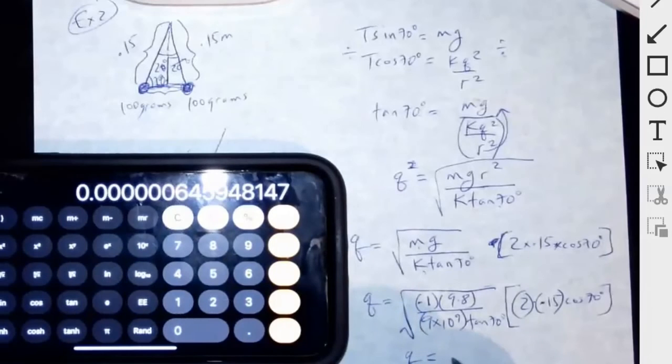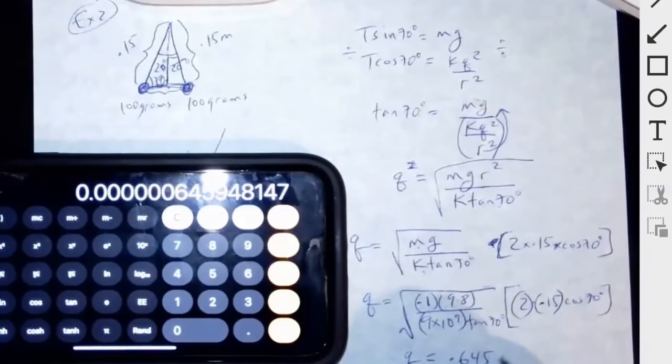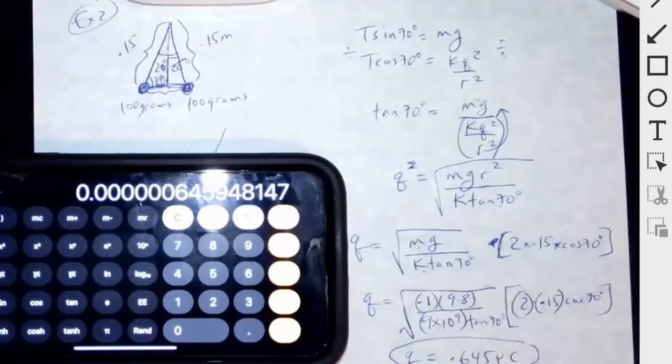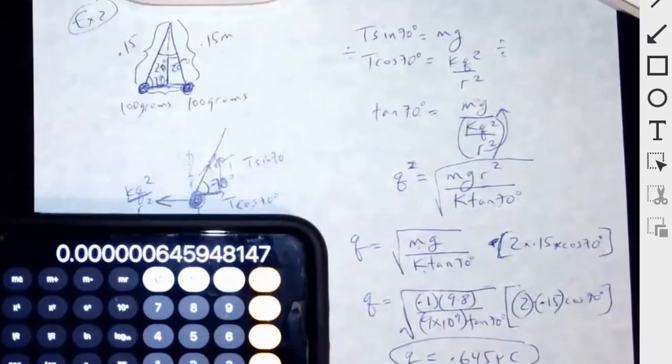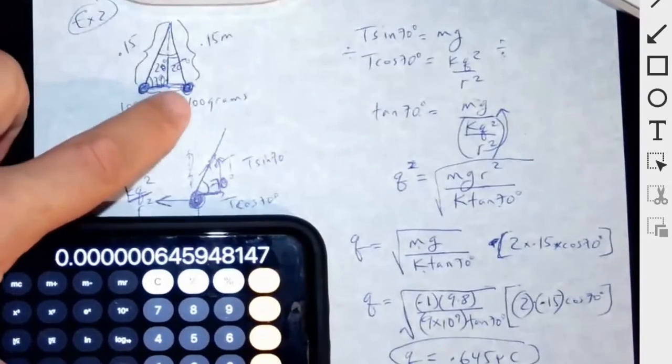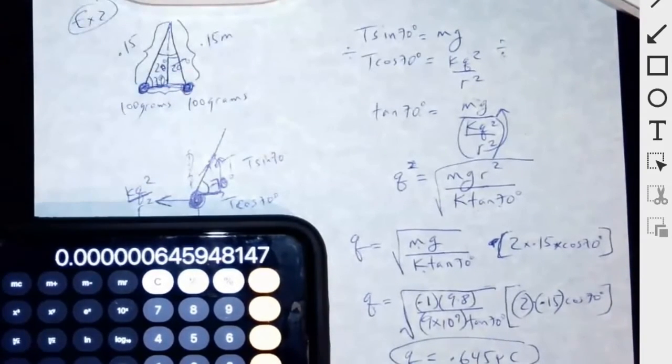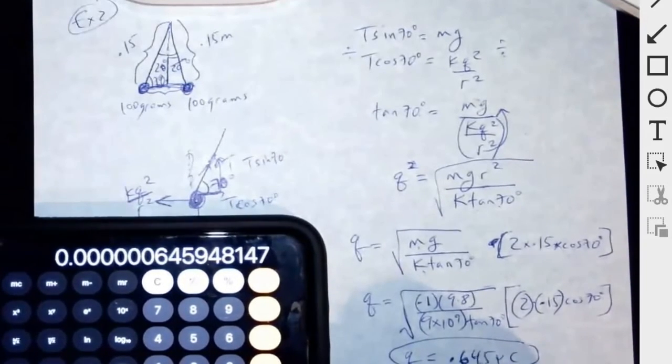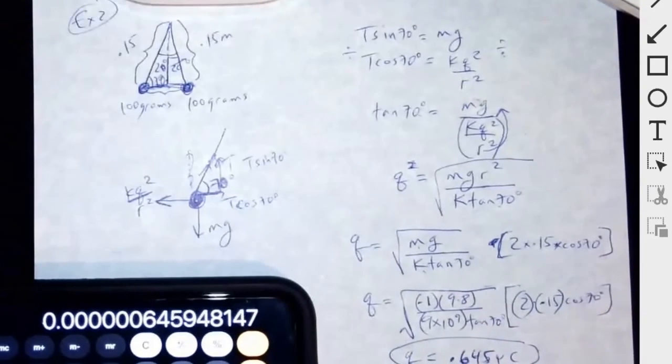So 0.645 microCoulombs. Yeah, that's realistic. So it's kind of a weaker charge than the other example. 0.645. A lot of calculations, huh? Any questions on those two examples?